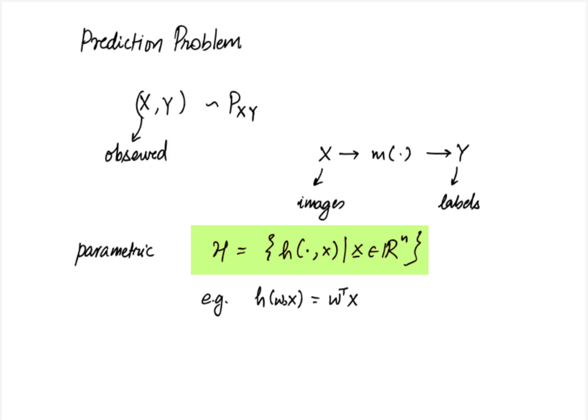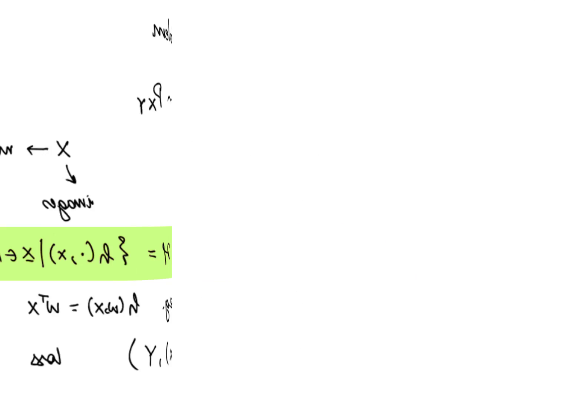We measure how good or bad a prediction is using a loss function. For a given parameter x the prediction for a random variable x is given by h of capital X comma small x and the actual label is y. So the loss function is given by l of h of x comma x comma y. The loss is such that it is small when the label y is close to its predicted label h of capital X comma small x. So once we have fixed the form of the function h and the loss function we need to find the parameters x such that h of dot comma x can be used to make predictions for y.